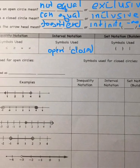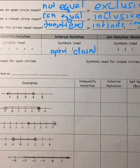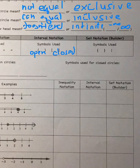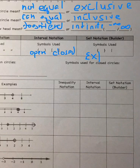If you look at the top, there are different notations: inequality notation on the left, interval notation in the middle, and set notation. Set notation adds a couple of extra symbols — squiggly brackets and a straight line. For example, where it says x is greater than or equal to negative two, in set notation you would say the set of all x's, straight line meaning 'such that,' x is greater than or equal to negative two, then close it with another squiggly bracket.